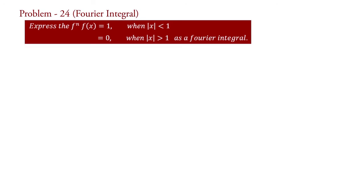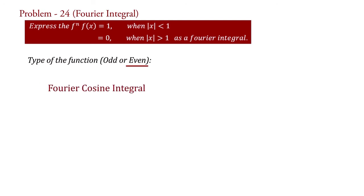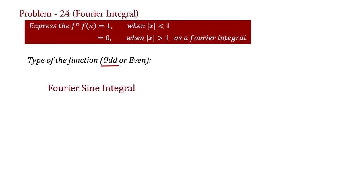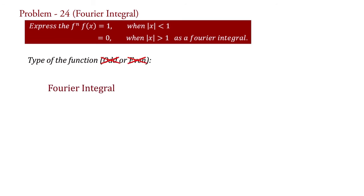First of all, we will check the type of function. If it is an even function, then we will use the Fourier cosine integral formula. If it is an odd function, then we will use the Fourier sine integral formula. And if it is neither even nor odd, then we will use the general formula of Fourier integral.